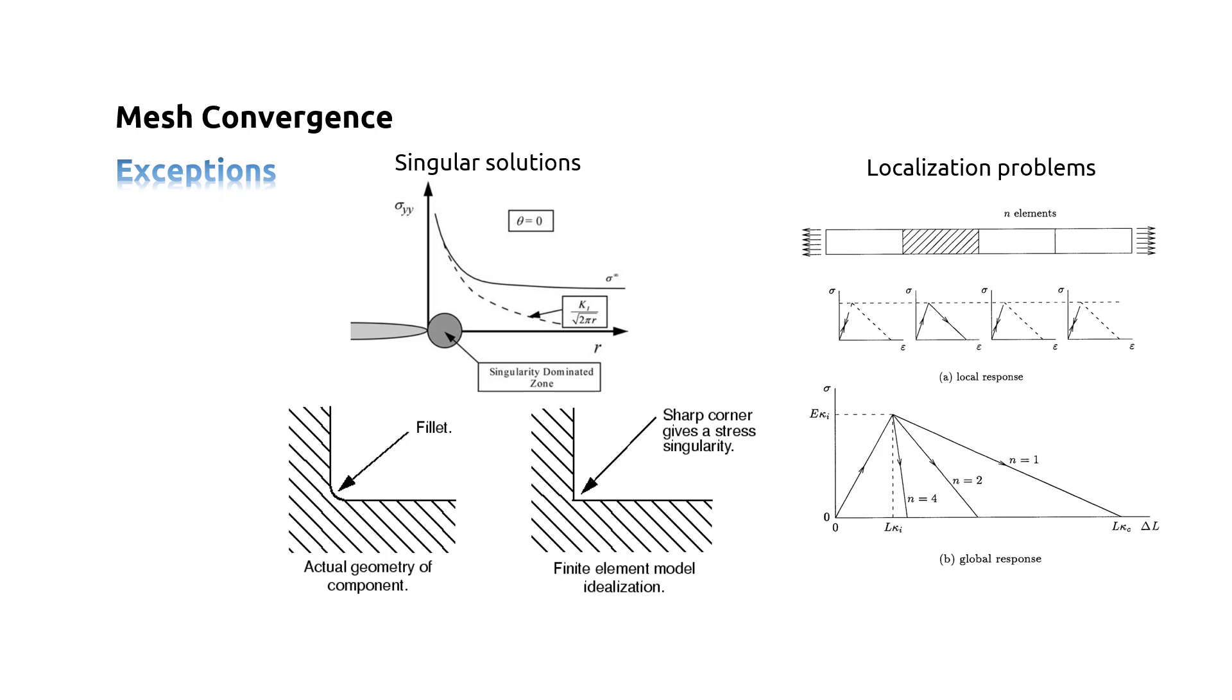Thus, localization of deformation occurs. The localization width equals the element size L divided by n, instead of being determined by the constitutive description.